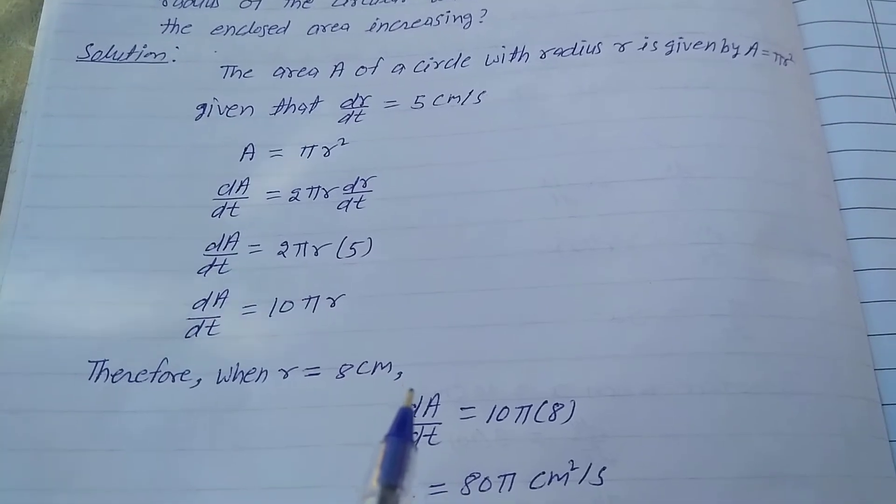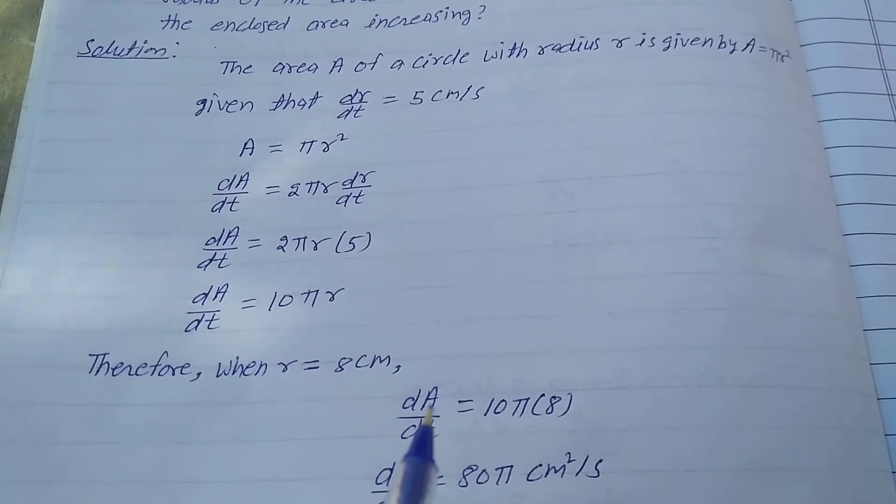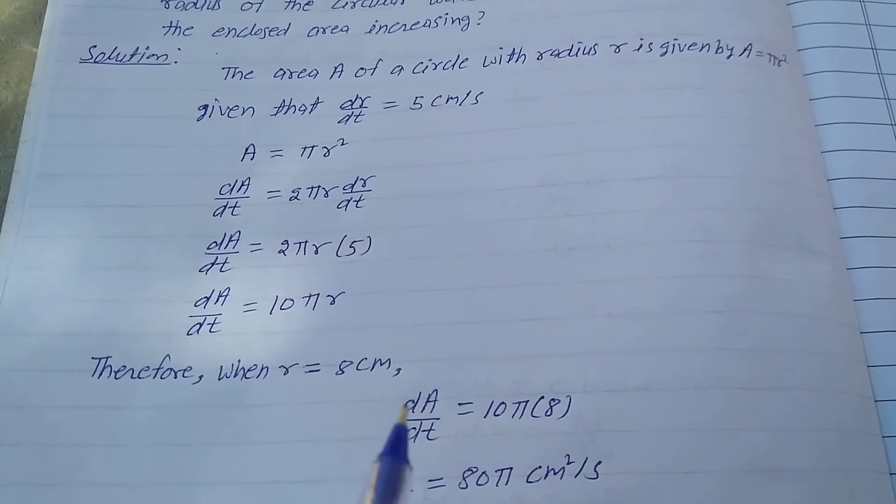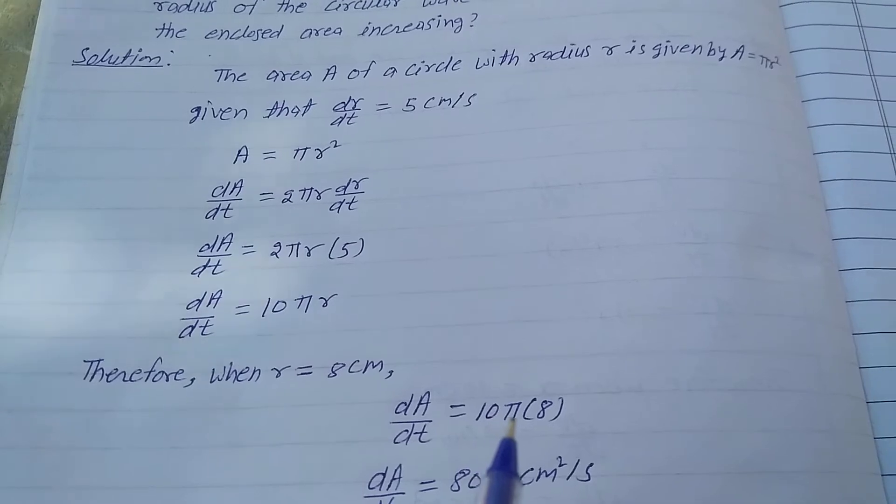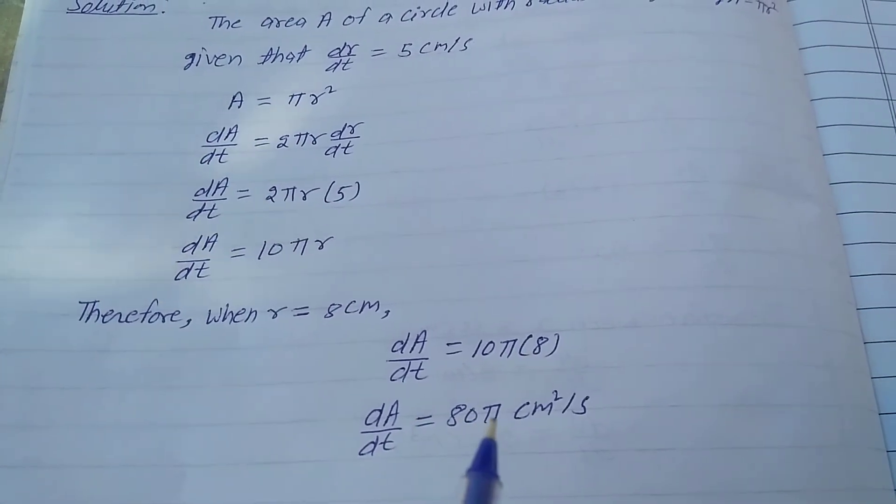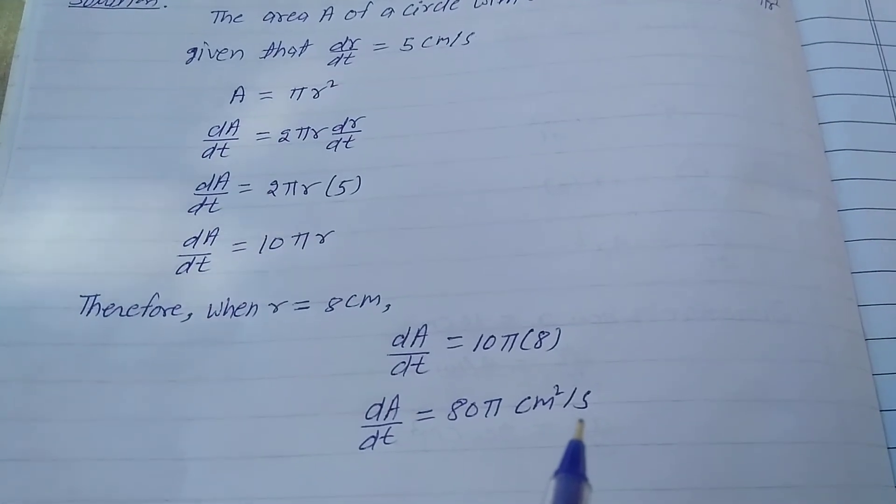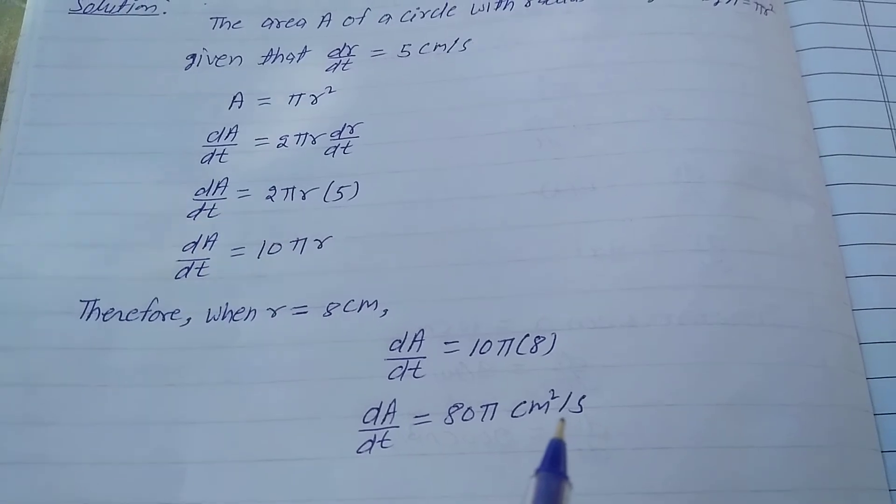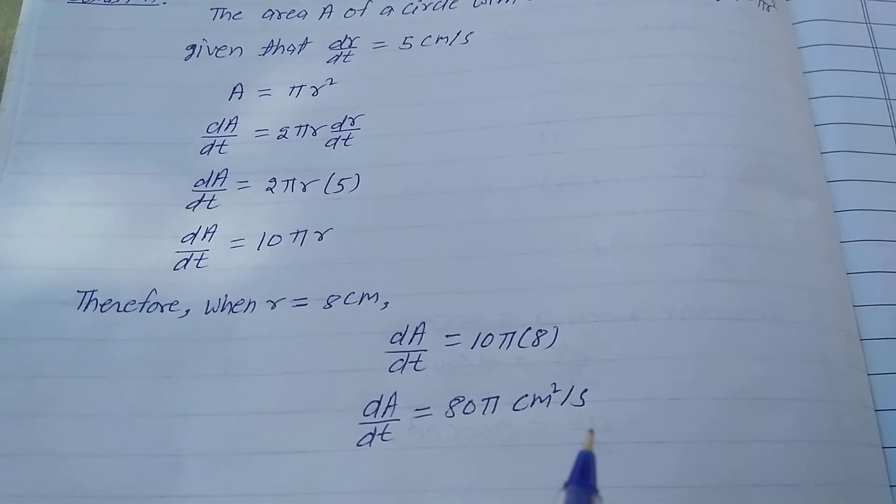Therefore, when r equals 8 centimeters, dA/dt equals 10π(8), which equals 80π centimeters squared per second. That is the area enclosed at the 8 centimeter radius of the circle. That is the solution.